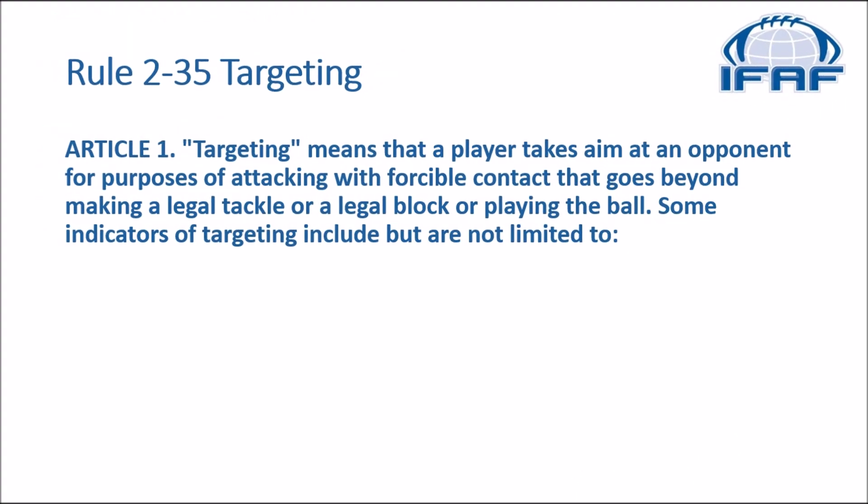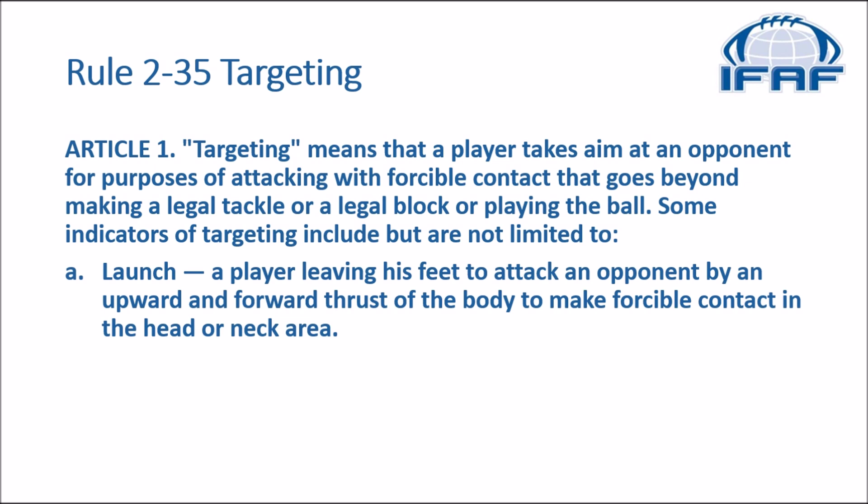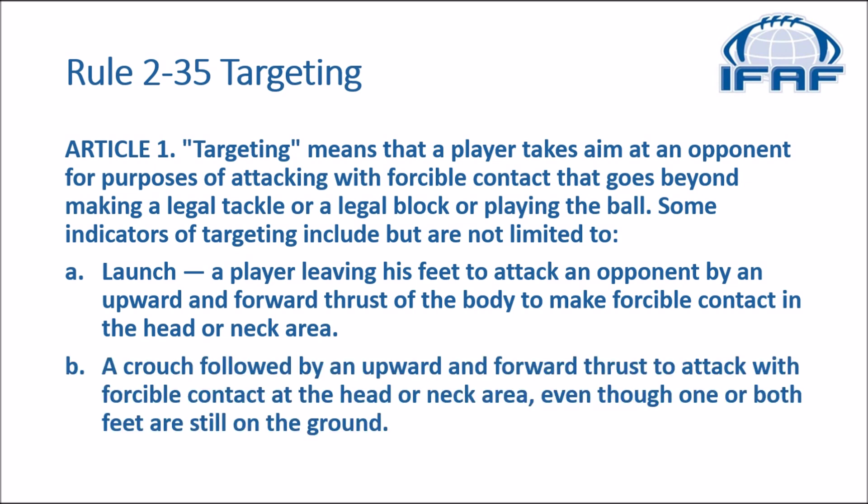Rule 2-35 goes on to define targeting. Targeting means that a player takes aim at an opponent for purposes of attacking with forcible contact that goes beyond making a legal tackle or legal block or playing the ball. Some indicators of targeting include but are not limited to: A — a launch, a player leaving his feet to attack an opponent by an upward and forward thrust of the body to make forcible contact in the head or neck area; B — a crouch followed by an upward and forward thrust to attack with forcible contact at the head or neck area even though one or both feet are still on the ground.